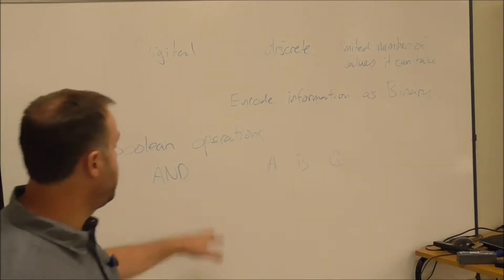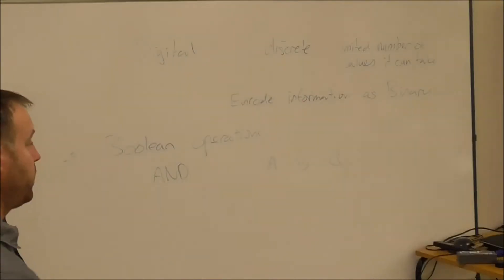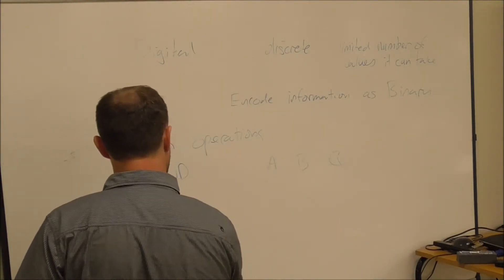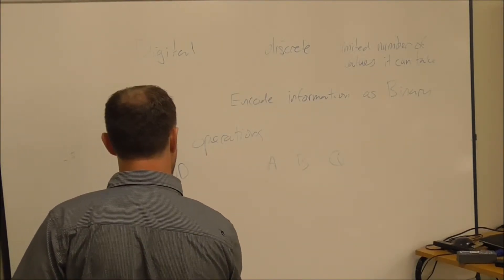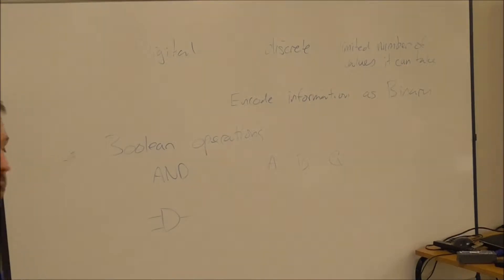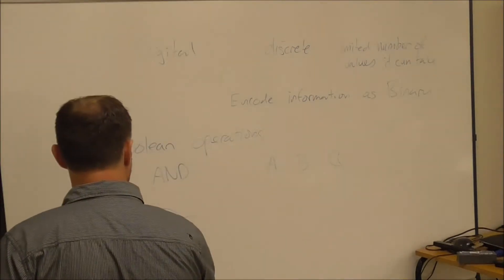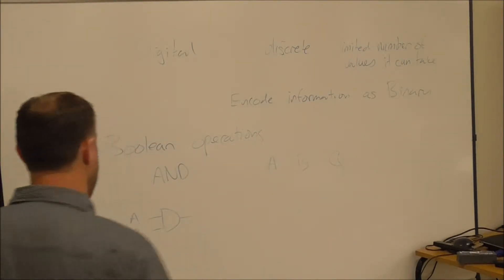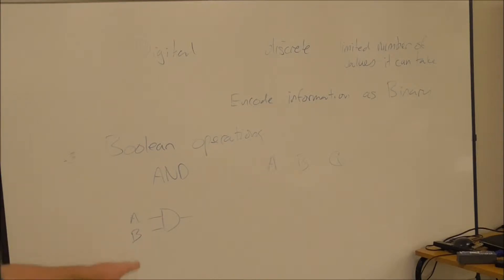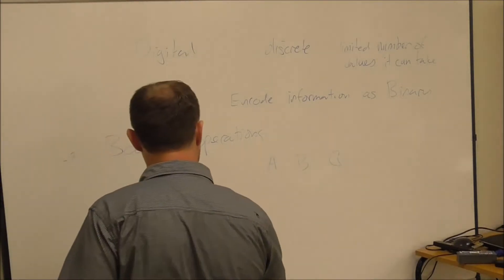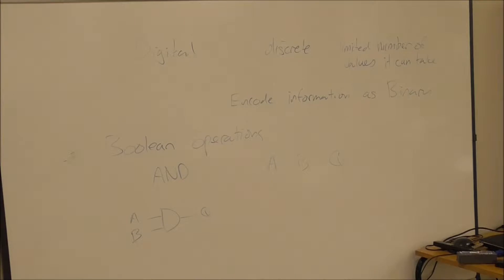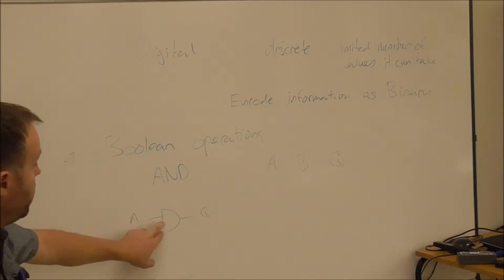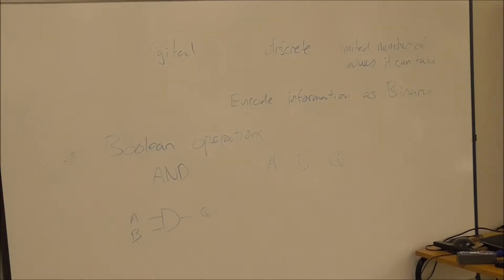I've got my two inputs A and B and my output Q. To show you that, I'm going to show you the symbol for an AND gate. The circuit symbol for an AND gate is simply that, with my two inputs A and B there on the left and my output Q on the right. It looks like a D but I've got two inputs on the left and one output on the right.